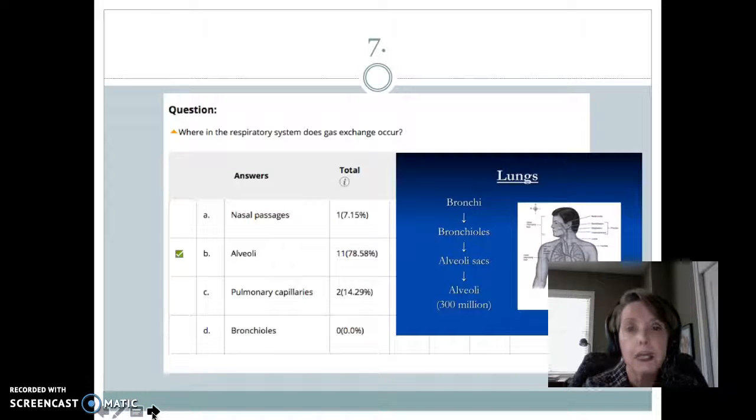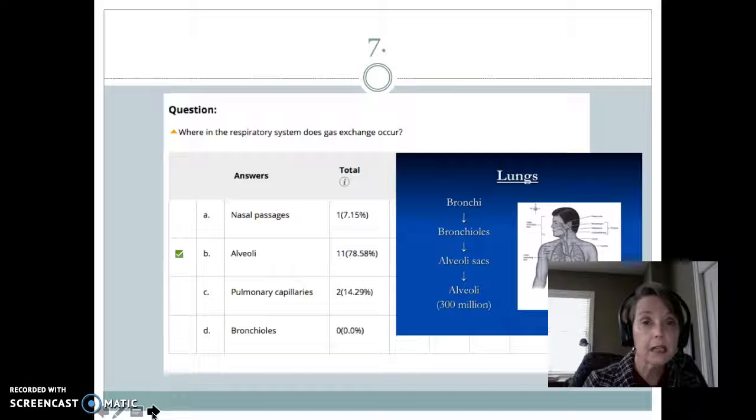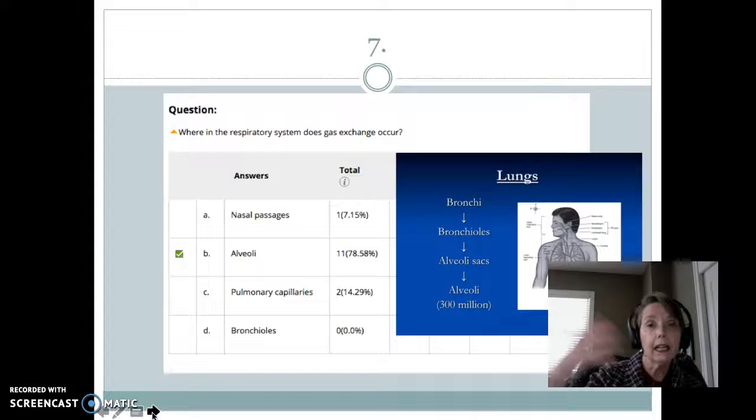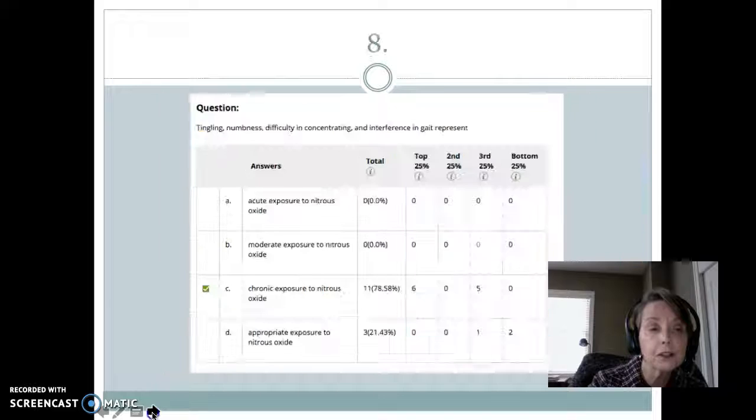Where in the respiratory system does gas exchange occur? That's in the alveoli, in the 300 million alveoli in the adult lungs. So inhaling that nitrous oxide gas, filling the alveoli with nitrous oxide. As we begin administration, the nitrous oxide diffuses from the alveoli into the pulmonary capillaries. Again, nitrous oxide as a drug is not soluble. It is relatively insoluble, so it gets to the brain quickly. When we stop our nitrous oxide sedation and are administering 100% oxygen, patients have nitrous in their pulmonary capillaries. It now diffuses into the alveoli and then is exhaled out. So gas exchange occurs at the alveoli.